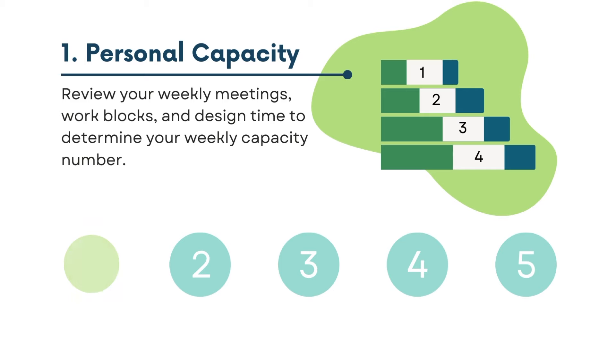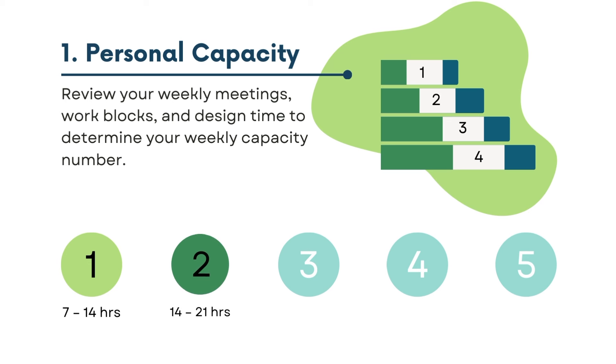In this capacity chart, a one means you have between seven and 14 hours of work to do within that week. There will be times in your work week, especially in between projects, where you might be at a one. This is a fantastic time to raise your hand to your team and ask if anyone needs help. This doesn't mean you can take on a whole new body of work — just make sure you clearly communicate, 'I can help this week.' A capacity number of two means you have between 14 and 21 hours of work to handle within that week.